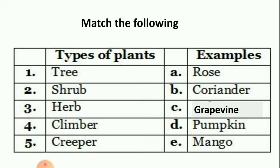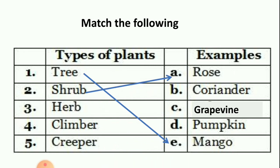Here we have match the following. These are the types of plants and these are the examples of them. We have to match the column of plant types to examples. First is tree — which is the example? Rose, coriander, grapevine, pumpkin or mango? The answer is mango. Mango tree. Next, number two: shrub. Which is the example? The answer is rose. Match shrub with rose.